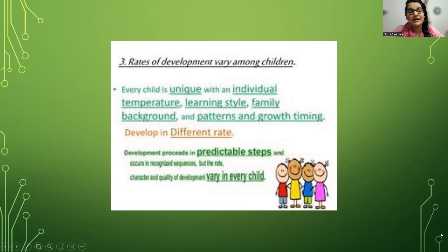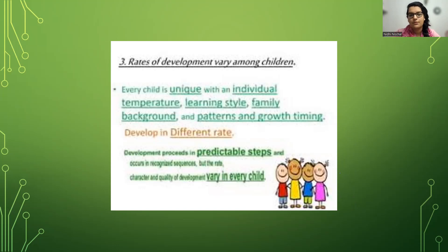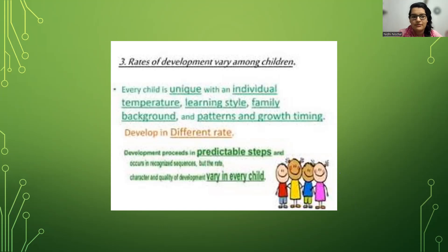Then comes the principle that rates of development vary among children. This is very important for us as teachers to know — not every student will perform the same or be able to do the same activities at the same age, as development may occur at different levels and different points in their lives. Every child is unique, with individual temperament, learning style, family background, growth patterns and timing, and develops at a different rate.